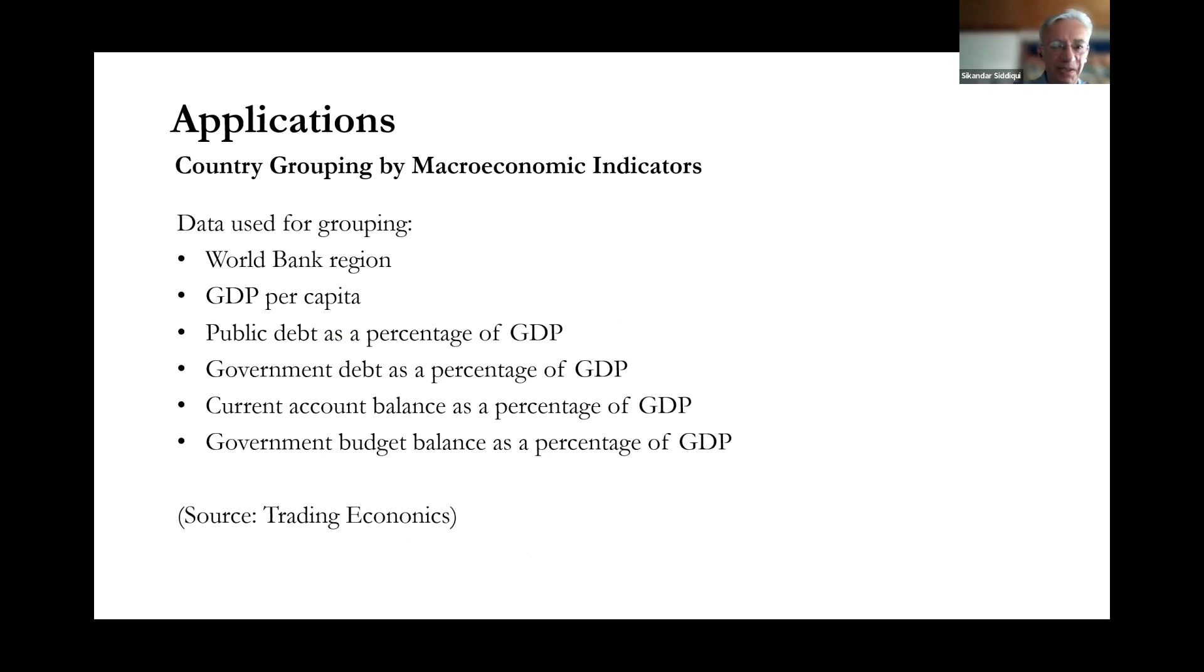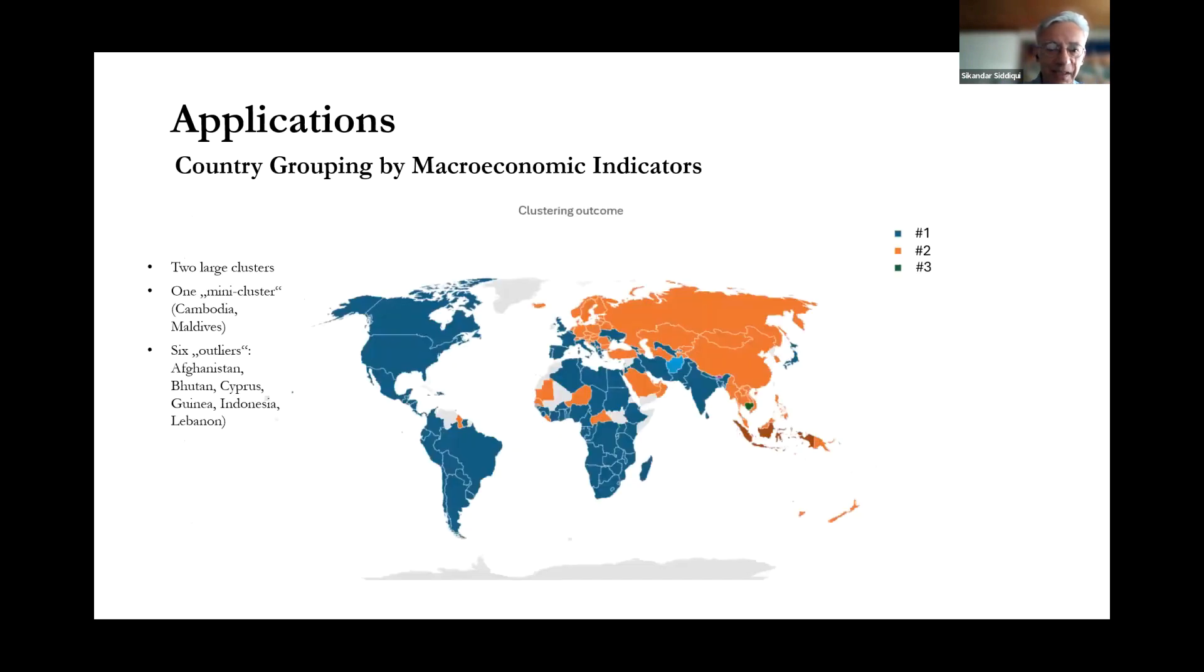Let's look at a more real world example to demonstrate that this actually works in the context we have designed it for, and this is an example where we have a country grouping. We took a data set from the World Bank for more than 100 countries, and we took a number of variables. The World Bank region, which is a discrete and unordered characteristic of the country, and then a total of five continuous characteristics: GDP per capita, debt as percentage of GDP, current account balance, and government budget balance as a percentage of GDP.